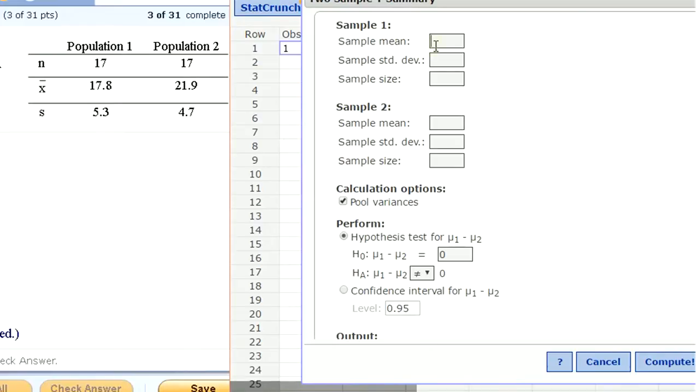I've got sample mean for population one, 17.8, standard deviation, 5.3, sample size of 17. Sample mean for the second is 21.9, 4.7 standard deviation, and again, 17.